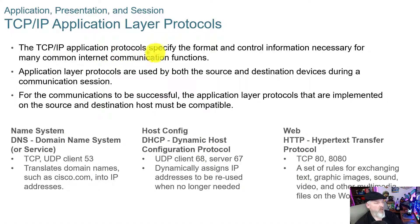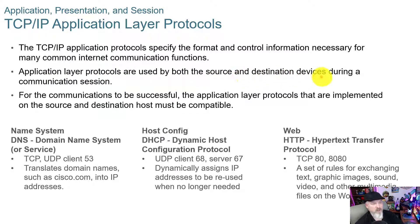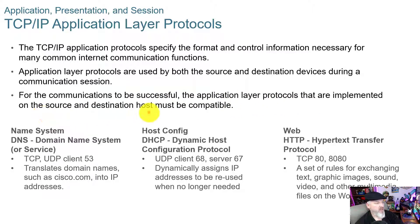The TCP/IP application protocols specify the format and control information necessary for many common internet communication functions. The application layer protocols are used by both the source and destination devices during a communication session. For the communications to be successful, the application layer protocols implemented on the source and destination host must be compatible. For example, DNS — domain name system — uses TCP and UDP on client port 53 and translates domain names such as Cisco into IP addresses.